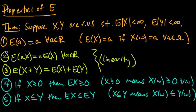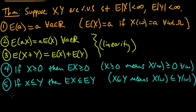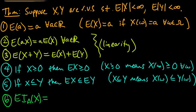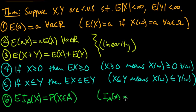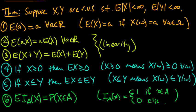Property 6: the expected value of the indicator function of the set A evaluated at the random variable X equals the probability that X is in A. Recall that the indicator function of a set A on some value x equals 1 if the value is in A, and 0 otherwise. That's just what we call the indicator function.